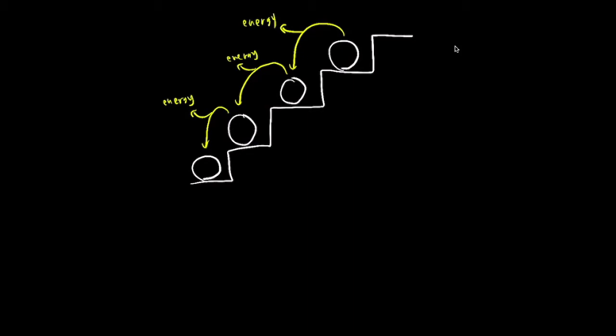If you supply an electron with energy, it can actually go up an energy level, and it can subsequently lose the energy to go down an energy level. Just like the ball can only go up and down steps but not in between steps of a staircase, electrons can only absorb a specific amount of energy that allows it to transition between energy levels — it cannot just absorb any amount of energy. This is what we call discrete energy levels.